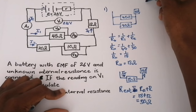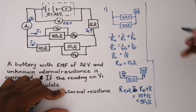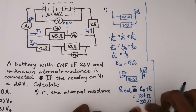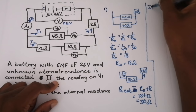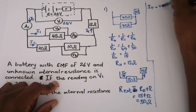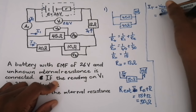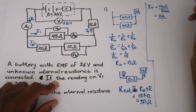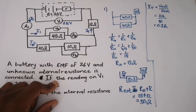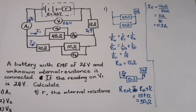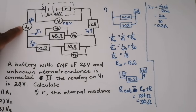Now I can calculate the total current. I have my external resistance of 30 ohms and my V-external of 24 volts. So I-total equals V-external divided by R-external, which is 24 divided by 30, giving a value of 0.8 amperes. That is the reading on A1.